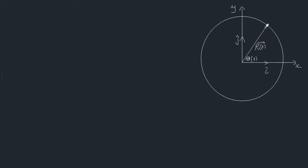Let's describe our position vector in terms of theta, i, and j. Because it's circular motion, the magnitude of our displacement vector is going to be a constant scalar, which I'll call r. To describe the position vector in terms of i and j, we just need to make a right triangle. The position vector r, with angle theta, gives us r cosine theta in the i direction and r sine theta in the j direction.